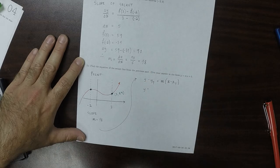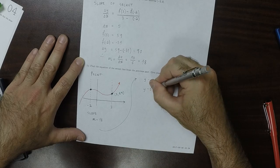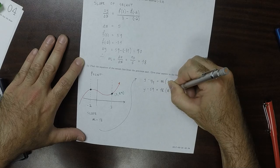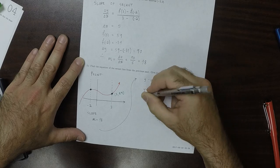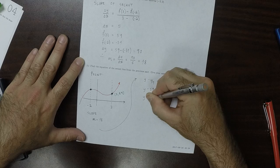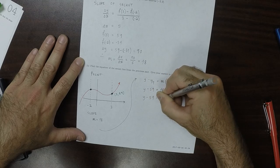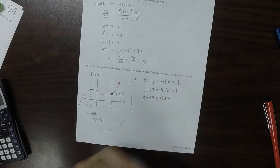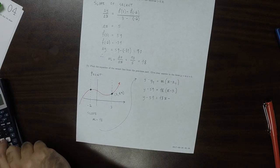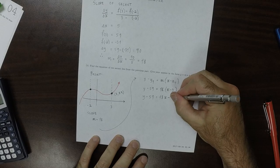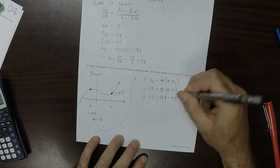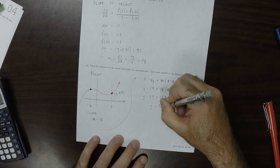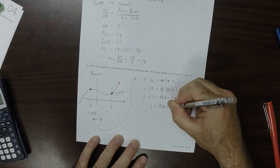So y minus 59 is 18 multiplied by x minus 3. So y minus 59 is 18x minus 54, and then add 59 to both sides. y is 18x plus 5.